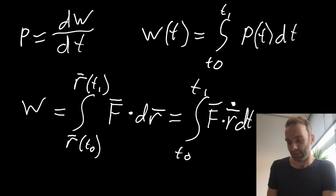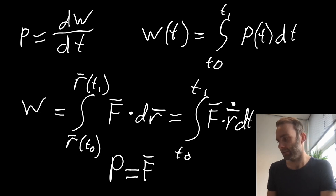And this can be seen to give the power, which is F dot product of the velocity.